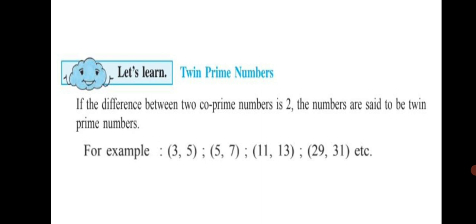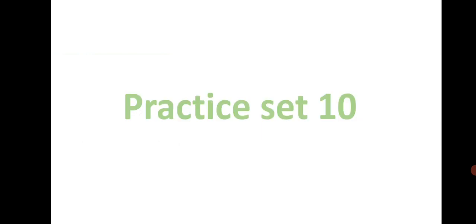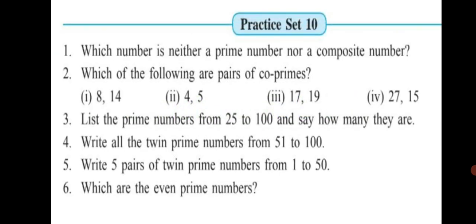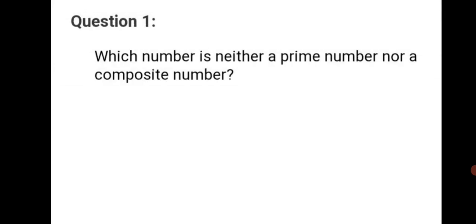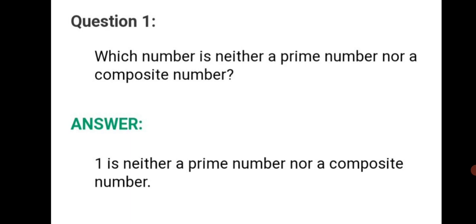That's all about co-prime and twin prime numbers. Let's begin with Practice Set 10 — you have altogether 6 questions. Question 1: which number is neither a prime nor a composite number? Answer: 1 is neither a prime nor a composite number.